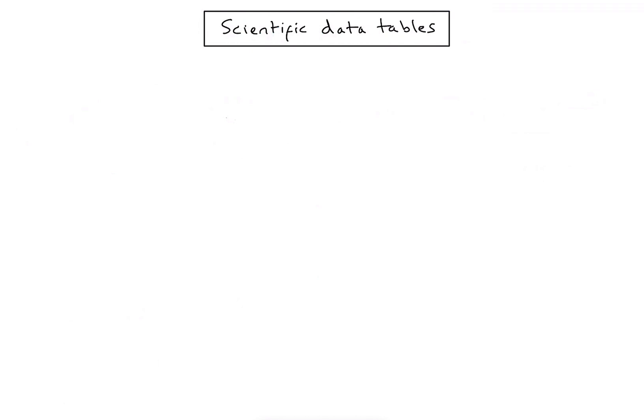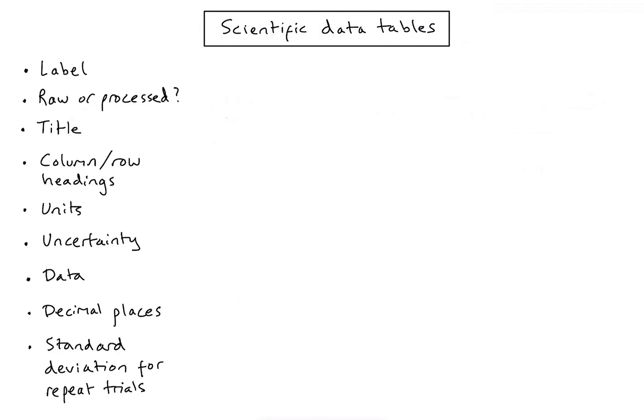We're going to look at how to draw good scientific data tables, focusing specifically on raw data tables — the measurements you record directly from your experiment. That's different from processed data, where you've used some kind of maths or calculations to convert your raw data into more useful data for answering your research question. So what features do we need to consider in a good raw data table?